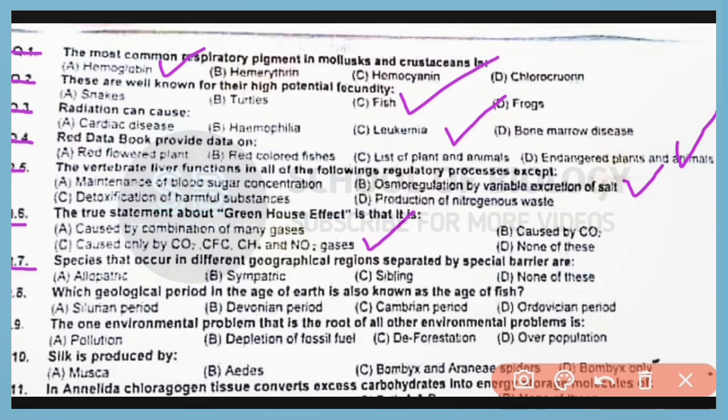Question number 7. The species that occur in different geographical regions separated by spatial barrier are known as allopatric species. Correct answer is option A.